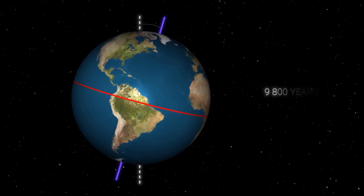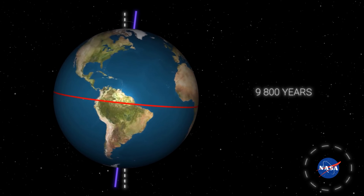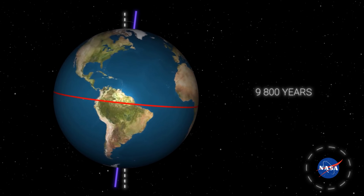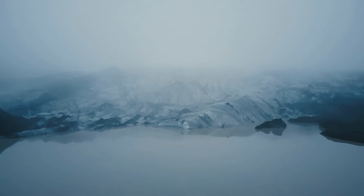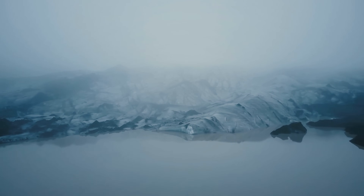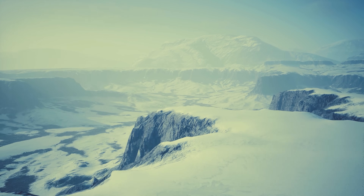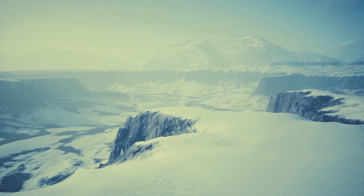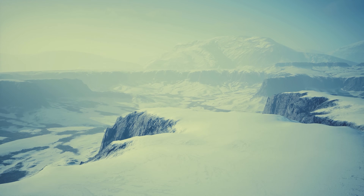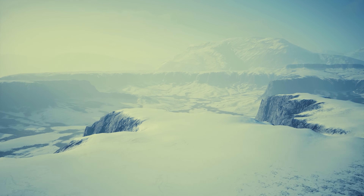According to NASA, the tilt is expected to decrease in about 9,800 years. Milankovitch considered the tilt to be the most important factor in the ice ages, so the entire duration of the Milankovitch cycle likely depends on it.